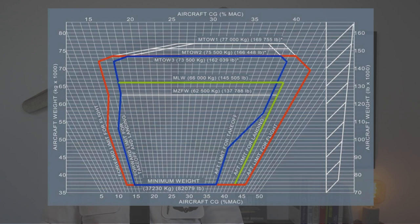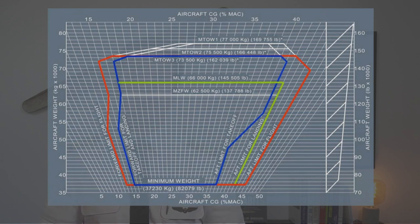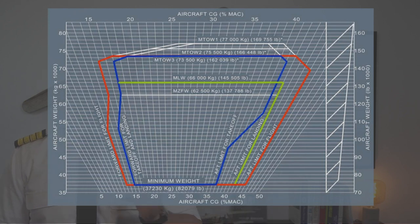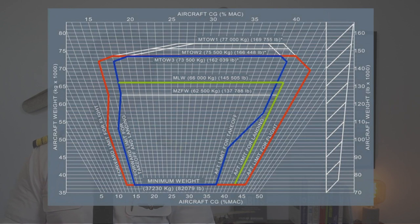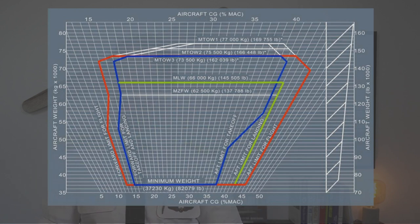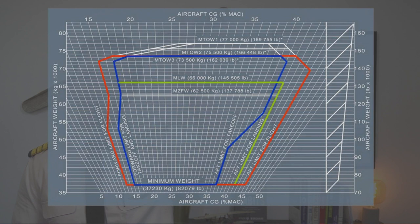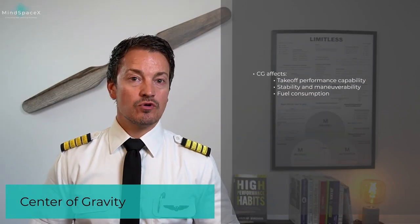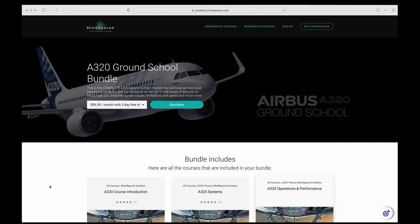Looking closer at the CG envelope, in this example I have three CG envelopes superimposed on top of each other, color-coded for clarity. The inner green envelope shows the CG limits for zero fuel weight. The blue and red envelopes represent takeoff and landing respectively. The left inclined lines represent the forward-most CG position, and the right inclined lines represent the maximum aft MAC percentage. The CG envelopes range somewhere between 16% up to about 43-44% MAC, not from 0 to 100%.